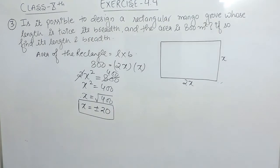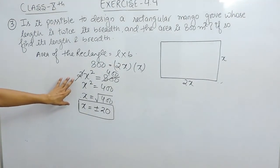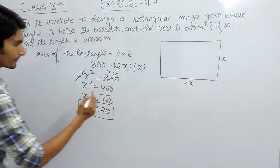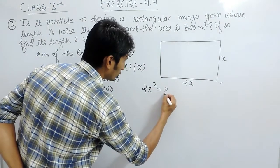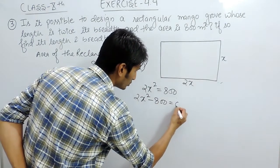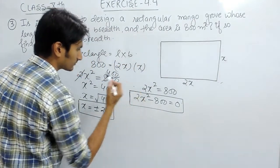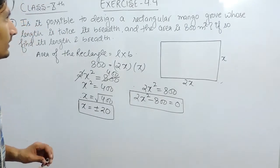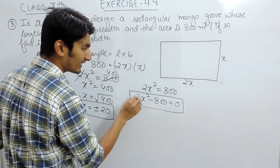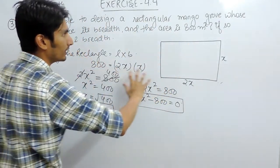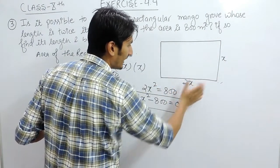In this question you have to prove whether this design is possible or not. For that, our equation is 2x² = 800, or equivalently 2x² − 800 = 0. This is our standard quadratic equation, representing a rectangle having length twice its breadth.